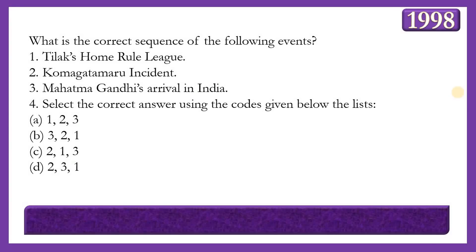Next question: What is the correct sequence of these events: Tilak Home Rule League, Komagata Maru incident, Mahatma Gandhi's arrival in India? The answer is option D — 2, 3, 1 — that is, Komagata Maru incident (1914), Mahatma Gandhi's arrival in India (1915), and Home Rule League established by Bal Gangadhar Tilak and Annie Besant (1916).